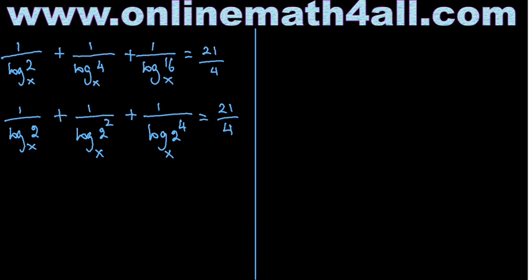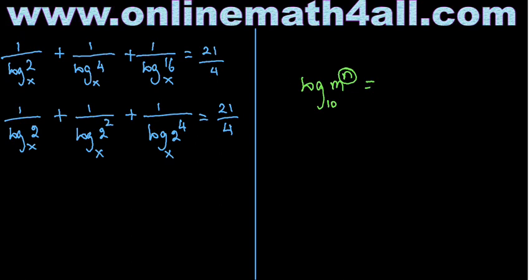We apply the fundamental law: log of M to the power N equals N times log M. So the exponent can be brought in front of the logarithm. Applying this: 1 over log 2 to the base X, plus 1 over 2 times log 2 to the base X, plus 1 over 4 times log 2 to the base X, equals 21 over 4.